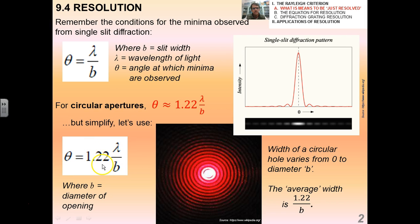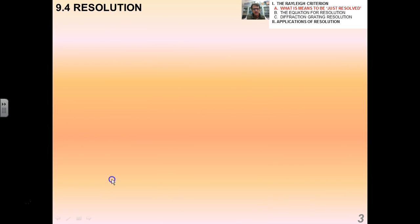For circular apertures there's a slightly different version. There's a factor of 1.22 that goes in front of the lambda over b, and this 1.22 is a result of using a calculus-based derivation of this equation. You don't have to derive this, but it has to do with the average width or the average opening of a circular aperture as being 1.22 over b. You're going to be using this equation quite a bit.